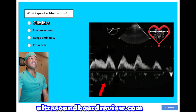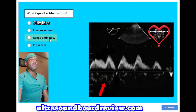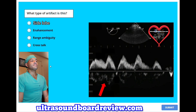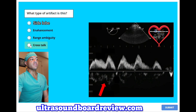What type of artifact is this? A. Side lobe. B. Enhancement. C. Range ambiguity. Or D. Cross stop. The answer is D — cross stop.